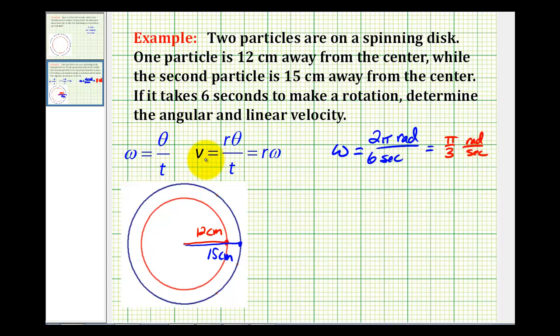Now we know from algebra that the velocity of an object is equal to its distance divided by the time. But because these particles are spinning around a circle, the distance is actually arc length, or r times theta. So because the radius of these two particles is different, the linear velocities will be different.